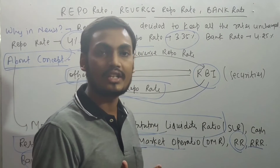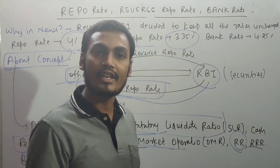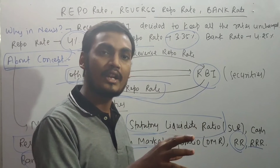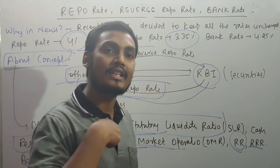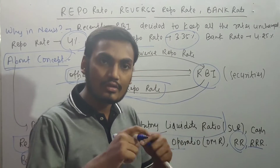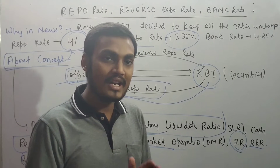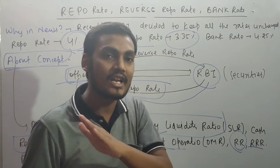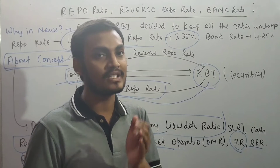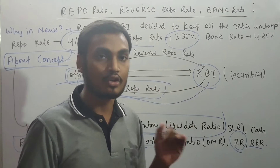If there is excess liquidity in the market, the RBI has the responsibility to suck out that excess liquidity. If there is a lack of liquidity, the RBI has to lend more money to borrowers to maintain liquidity. All of this is done to keep inflation in check, which is targeted at 4% plus or minus 2% deviation, as well as to maintain economic growth.